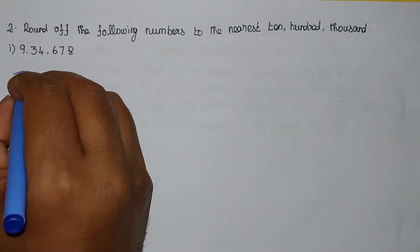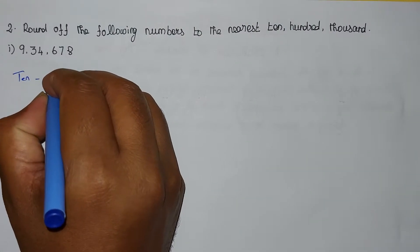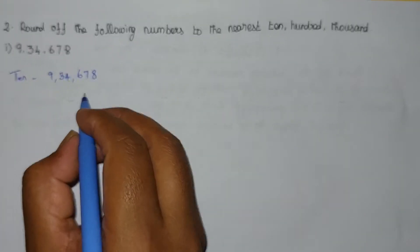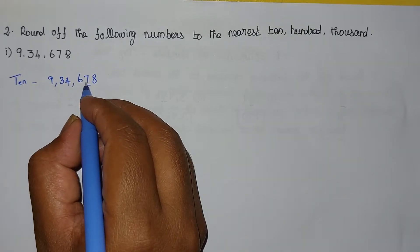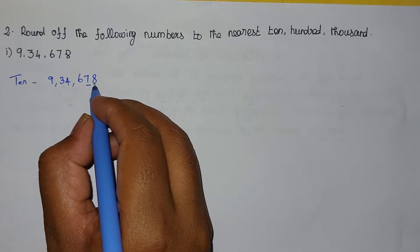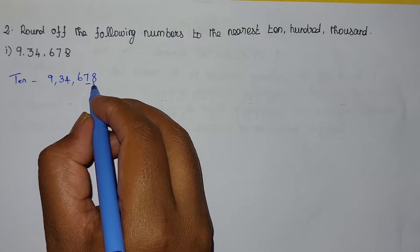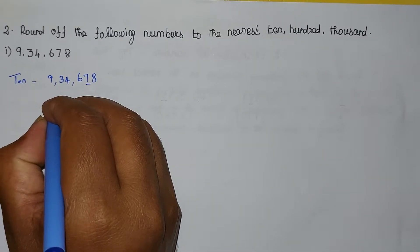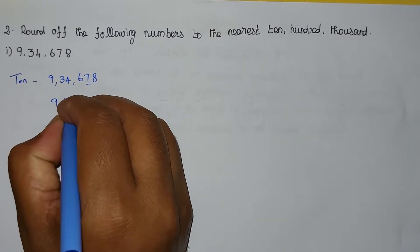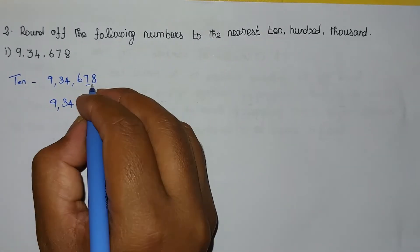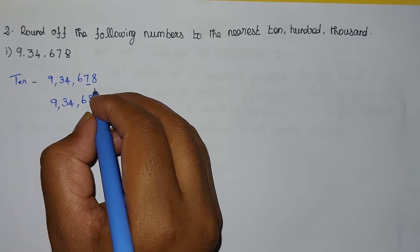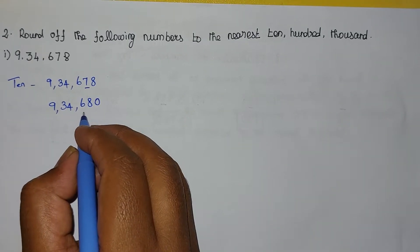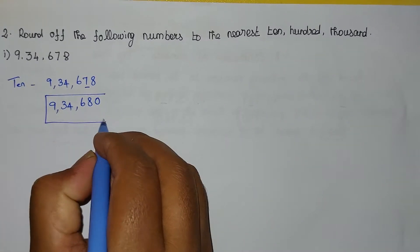First, rounding 9,34,678 to the nearest 10. The 10s position digit is 7. The right-hand side value is 8, which is greater than 5. So we add plus 1: 7 plus 1 equals 8. The right-hand side digit becomes 0. The answer is 9,34,680.